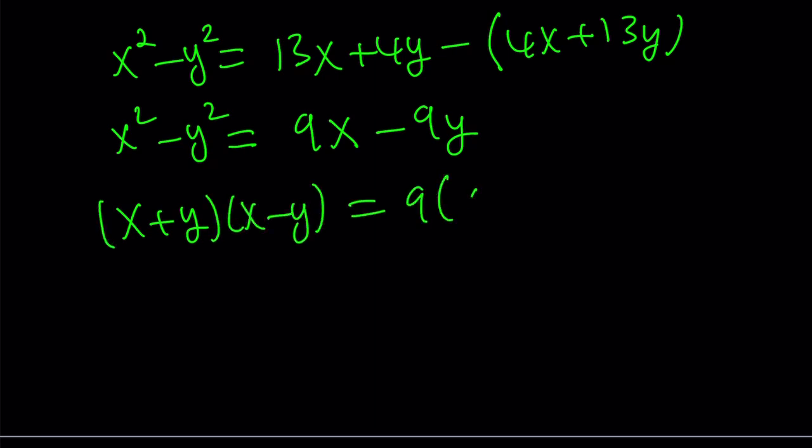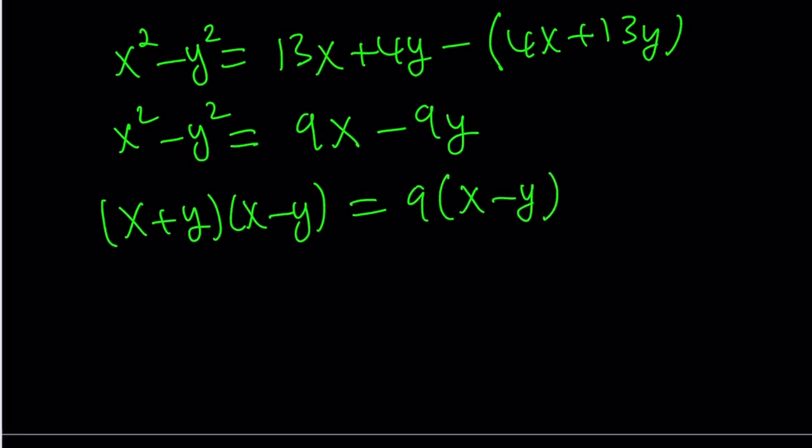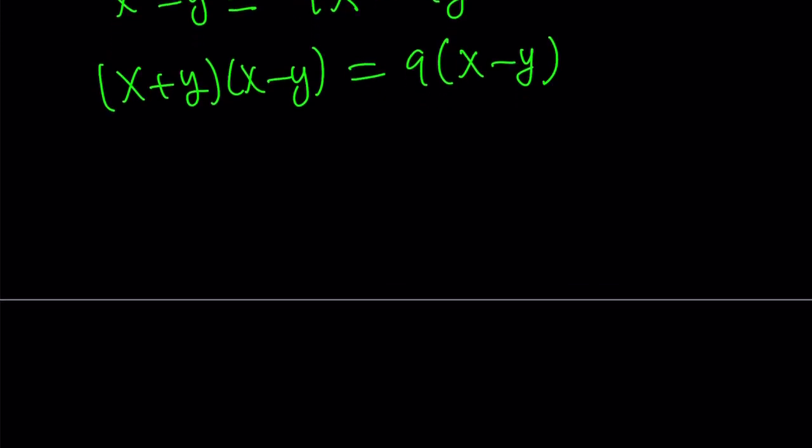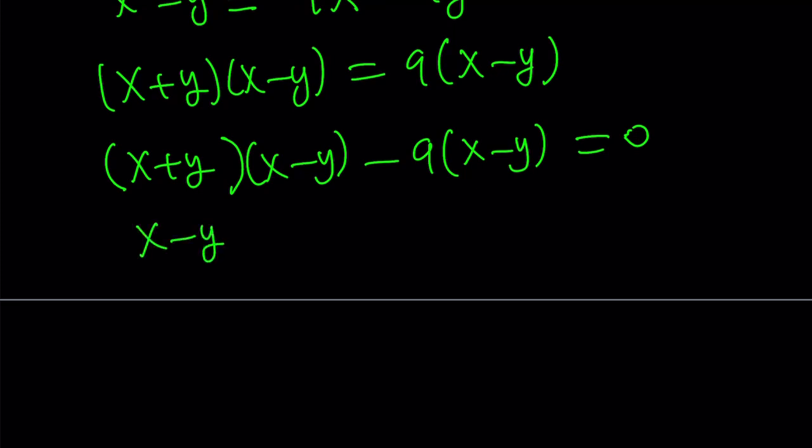But do not cancel anything out because you're going to lose solutions big time. And you can tell from here that y equals x works because we've noticed that with the first method. So now, instead of canceling out terms, I'm going to put everything on the same side. So a good strategy is put everything on the same side and set the whole thing equal to 0. Nice. Now, x minus y is a common factor. Take it out. And then you end up with x plus y minus 9.